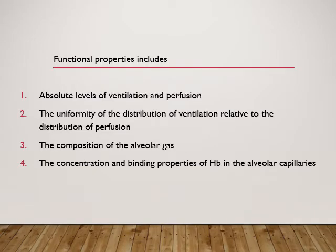Functional properties include the absolute levels of ventilation and perfusion — in some cases, inadequate ventilation and perfusion result in poor gas exchange. The uniformity of distribution of ventilation relative to perfusion also matters: in segmental lobe collapse there is no adequately ventilated alveoli but perfusion is adequate, while in pulmonary embolism and pulmonary hypertension there is no perfusion but the lung is adequately ventilated. The composition of alveolar gas also plays a role — more soluble gases diffuse faster; for example, carbon dioxide diffuses much faster than oxygen. If the concentration of hemoglobin in alveolar capillaries is low, it results in low diffusing capacity.